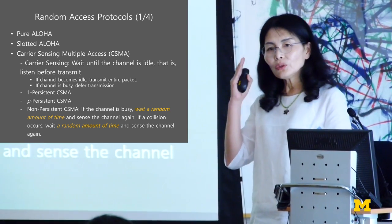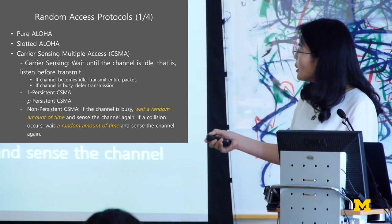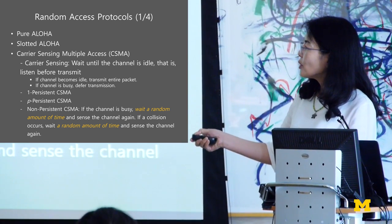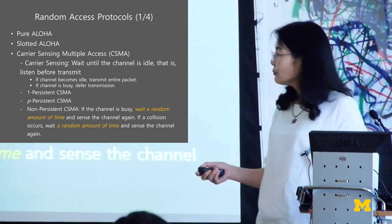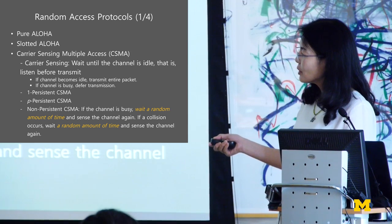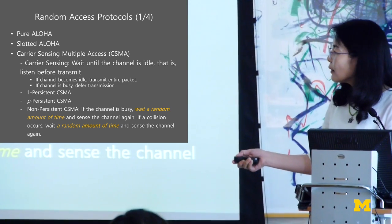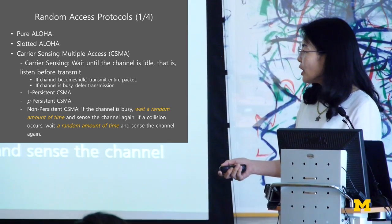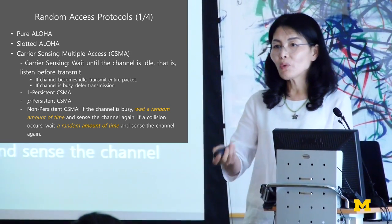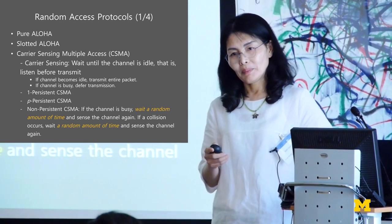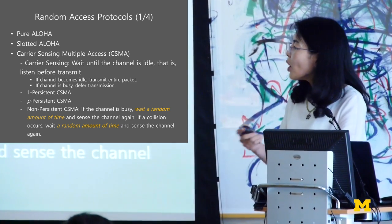Basically, you just listen until the channel is idle, then you get a chance to transmit. With one-persistent CSMA, whenever there is a chance you transmit with probability 1. With P-persistent CSMA, whenever there is a chance you transmit with probability P. With non-persistent CSMA, when the channel becomes idle, instead of sending right away you wait a random amount of time — which is what my talk is about today.